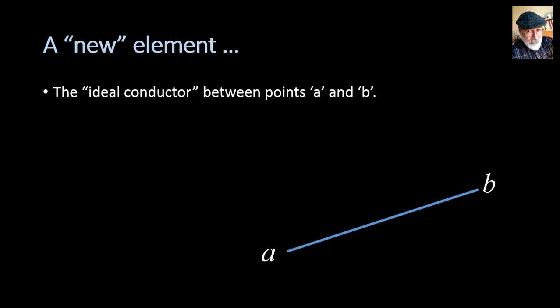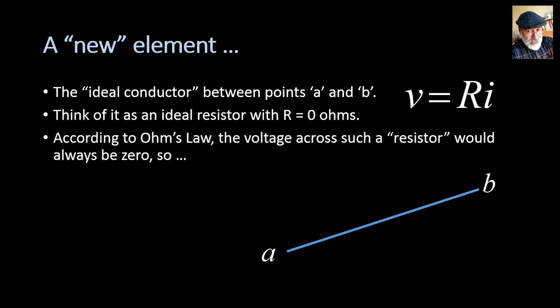Let's introduce another element, a new element if you will. The ideal conductor between points A and B in a circuit. Think of it as if it's a resistor with resistance R of 0 ohms. From Ohm's law, the voltage difference between VA and VB is going to be RI. V is RI. But R is 0. So that means that whatever the current through the ideal conductor, the voltage difference between VA and VB is going to be 0. In other words, the ideal conductor will guarantee that VA equals VB, whoever A and B are, and whatever the current is flowing through the ideal conductor. That is irrelevant. This is an idealization.